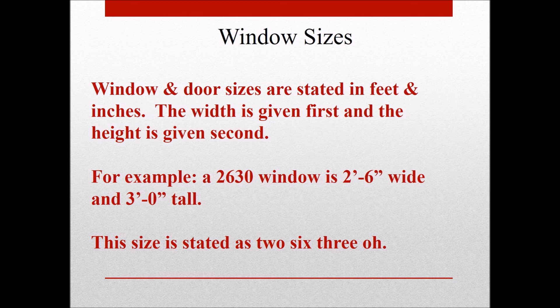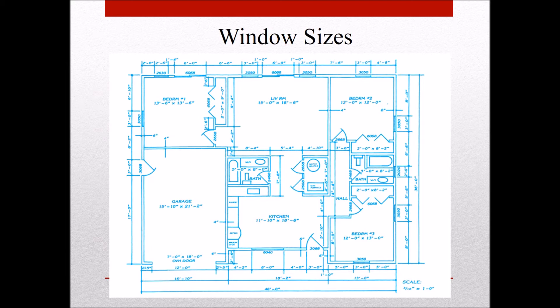Windows and door sizes are always stated in feet and inches — width is given first, height second. So a 2630 window is 2 feet 6 inches wide and 3 feet 0 inches tall. A 6068 door is 6 feet wide and 6 feet 8 inches tall — 6'8" is the standard door height. Here's a 2668, here's a 3068 door, and this window is 6040.